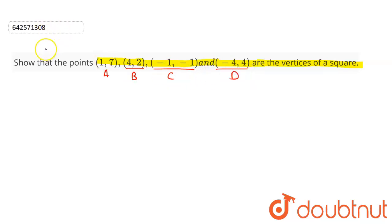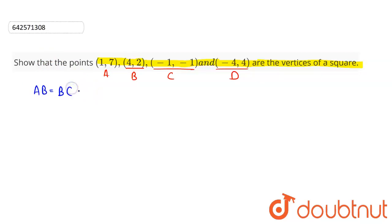As you know, all sides of a square are equal and the diagonals are also equal. That means AB must be equal to BC, must be equal to CD, and must be equal to DA — so all these sides must be equal.